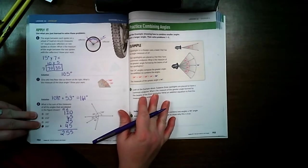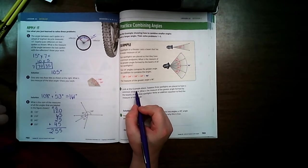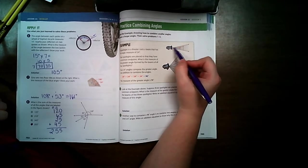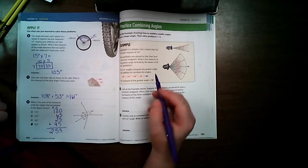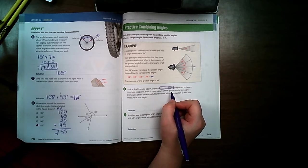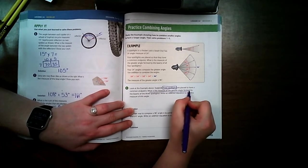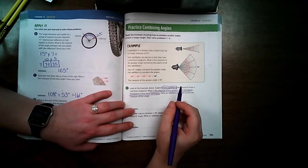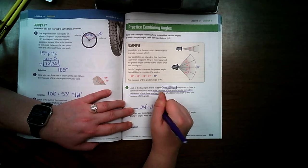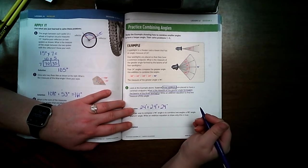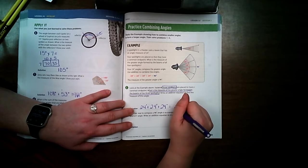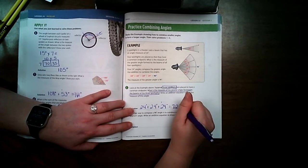Alright, let's turn to page 703. Look at the example above. Suppose three spotlights are placed to have a common endpoint. Right here it shows us that one spotlight is worth 24 degrees. So this wants to know if we have three spotlights together, what is it going to be? What is the measure of the greater angle formed by the beams of the three spotlights? So if we have one but we need three, that means we're going to do 24 plus 24 degrees plus 24 degrees, or you can do 24 degrees times 3. 4, 8, 9, 10, 11, 12, carry my 1, 2, 4, 6, 72 degrees.